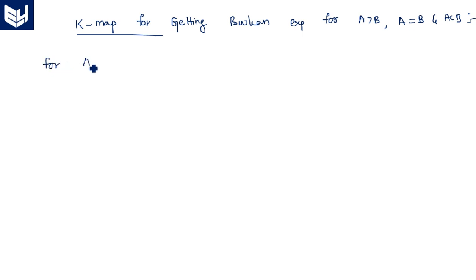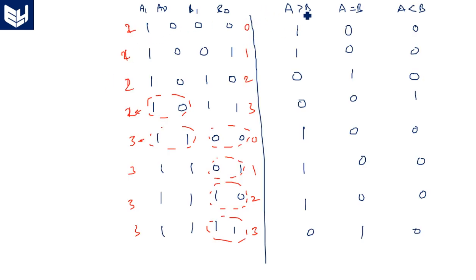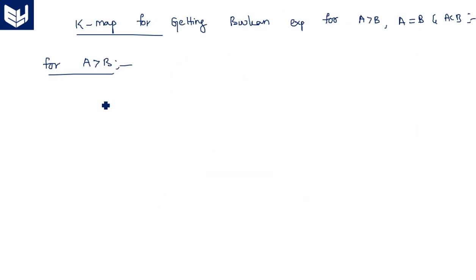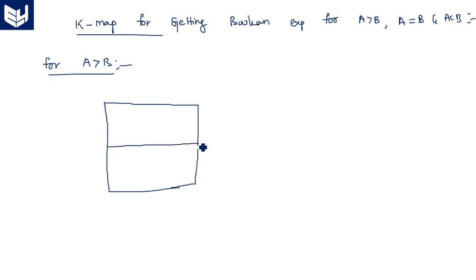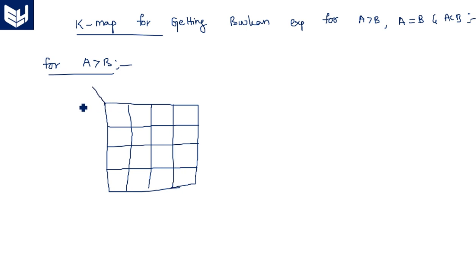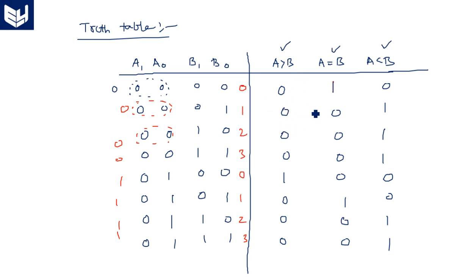First, the K-map for A greater than B. Since we have four input bits — A1, A0, B1, B0 — we use a four-variable K-map. The K-map is arranged in Gray code format: 00, 01, 11, 10 along both axes. From the truth table, we directly place the ones at their corresponding locations: positions 1, 4, 8, 9, 12, 13, and 14.